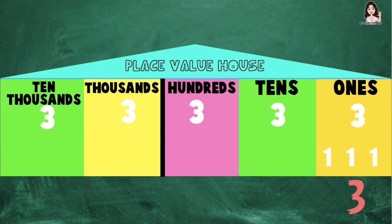Let's proceed now to digit 3 at the tens place. Here at the tens place, we have 3 tens. So let's count together — count with me, children: 10, 20, 30. So the value of digit 3 at the tens place is 30.